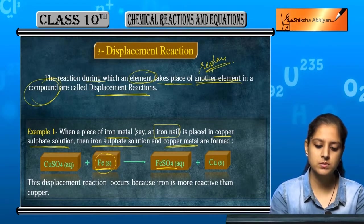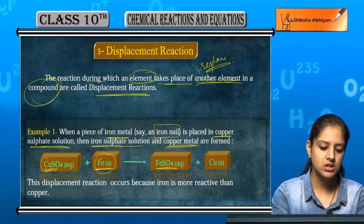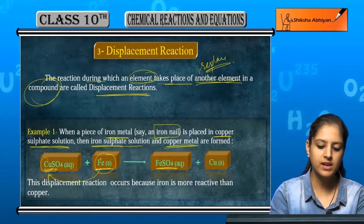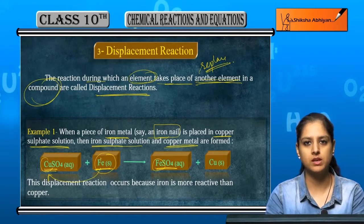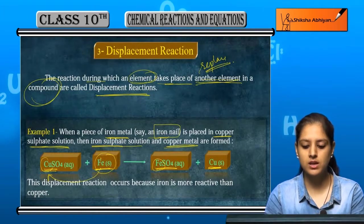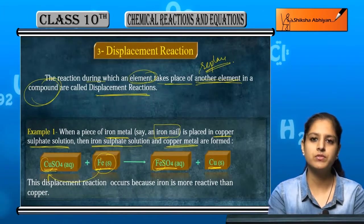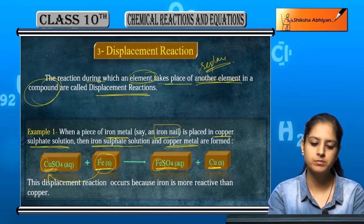So what happened here? Fe and CuSO4, so Cu's place was taken by Fe and FeSO4 was formed and copper metal formed separately. So Fe replaced or displaced Cu.